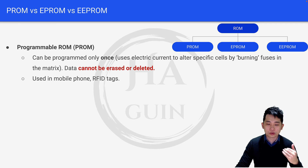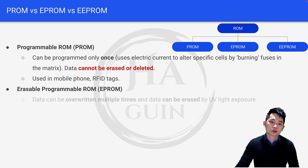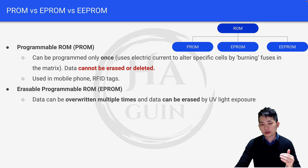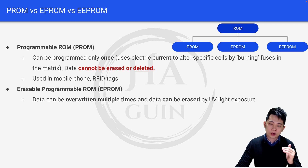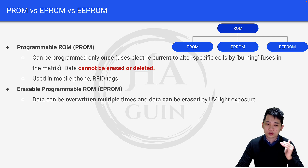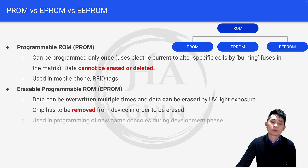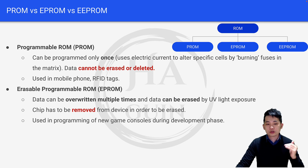PROM is used in mobile phones and RFID technology — for example, RFID tags used to access your school or accommodation. Next, EPROM: data can be overwritten multiple times and data can be erased by UV light exposure. Unlike PROM which can only be programmed once, EPROM can be overwritten multiple times, but the chip has to be removed from the device in order to be erased.